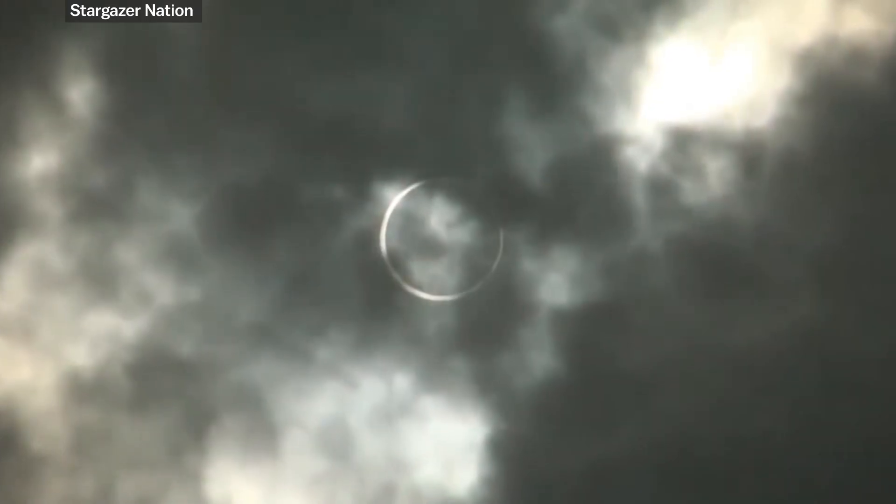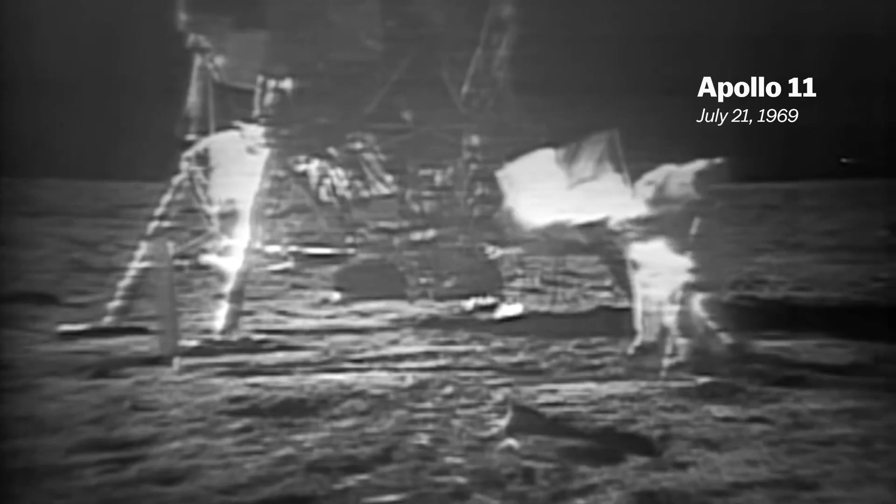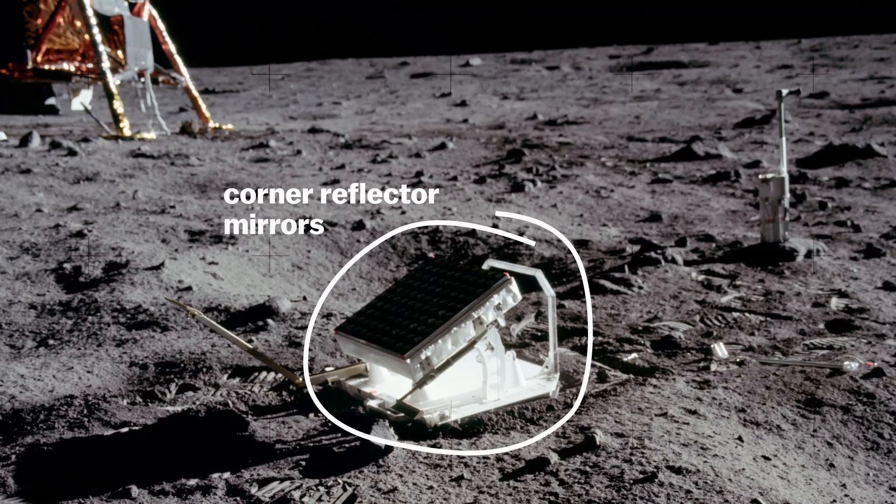In the far future, Earth will only get annular and partial solar eclipses because our moon is moving further away. We know that because Buzz Aldrin and Neil Armstrong left mirrors on the moon in 1969.